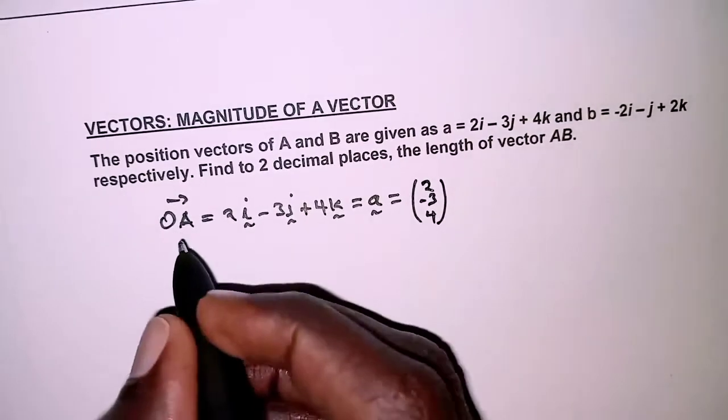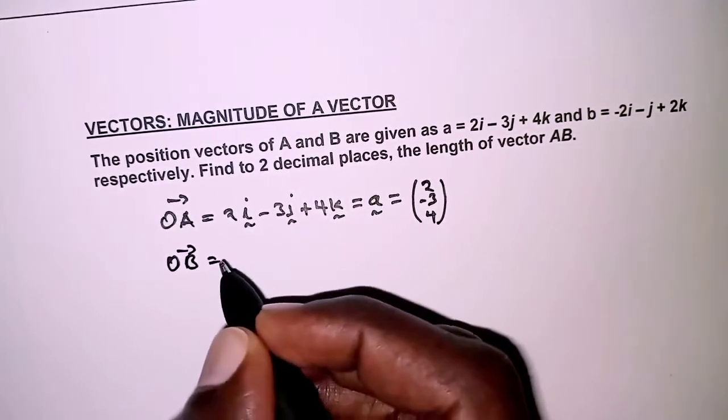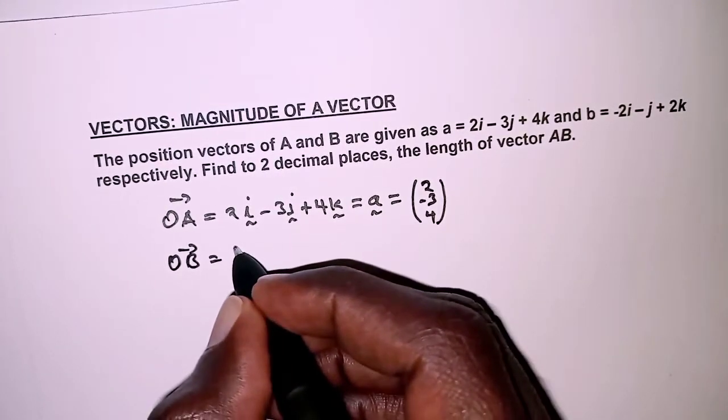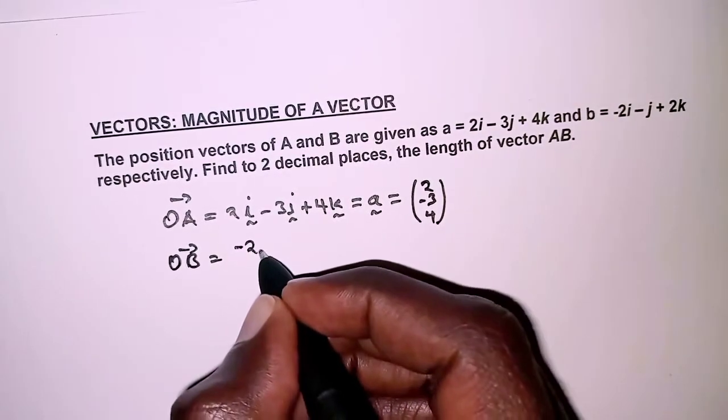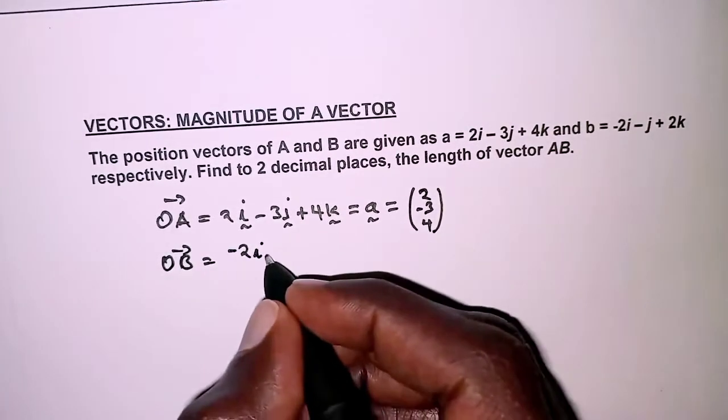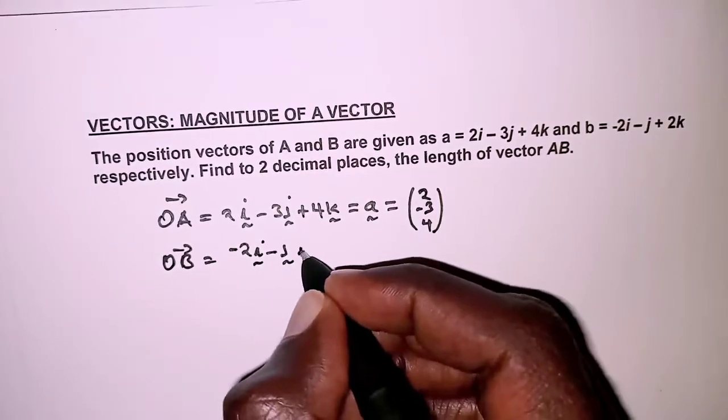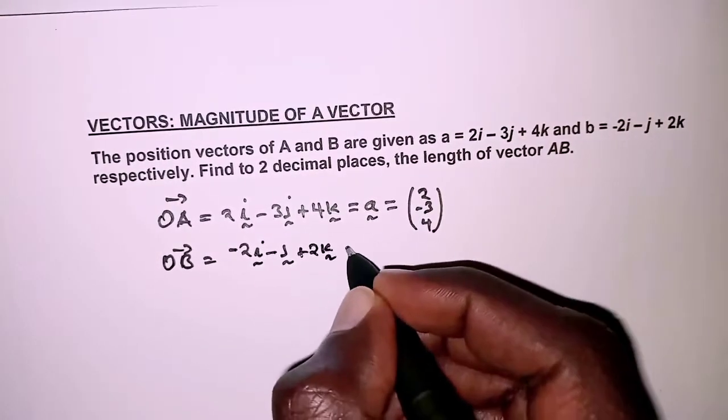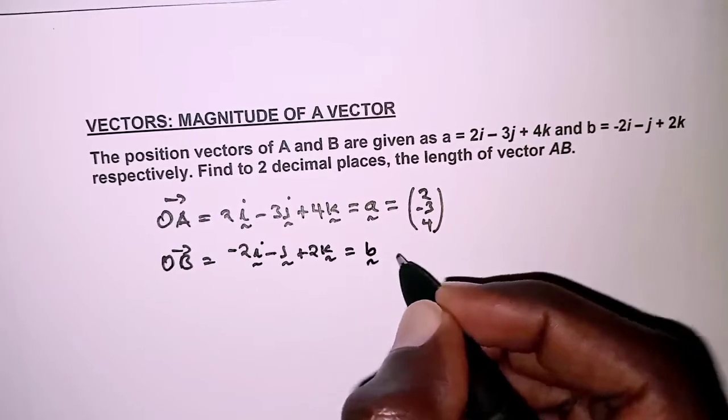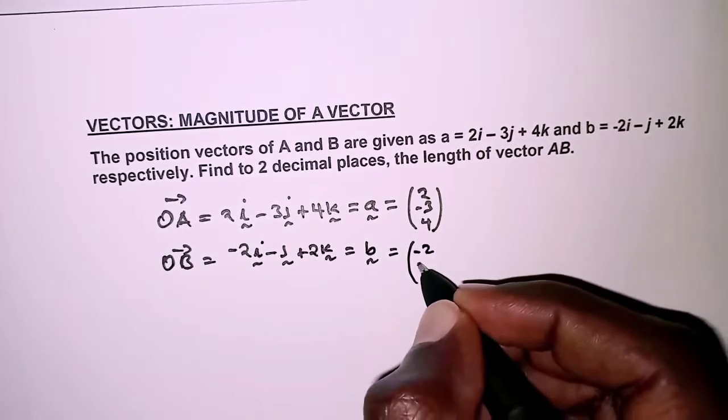Similarly for the position vector of B, that is OB, we have it as -2i - j + 2k, which can also be given as a column vector: (-2, -1, 2).